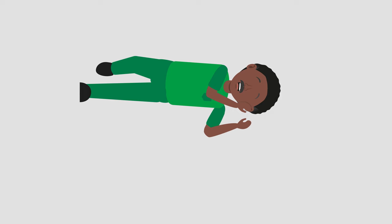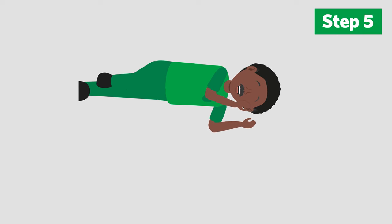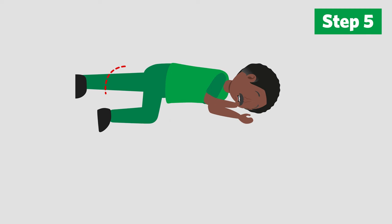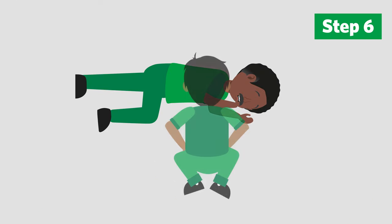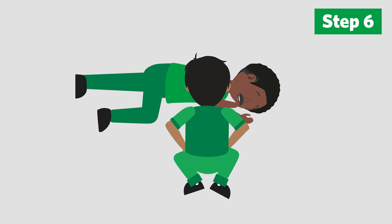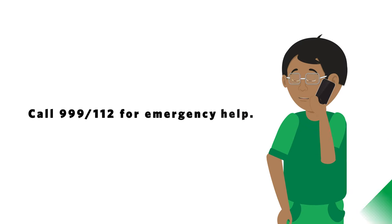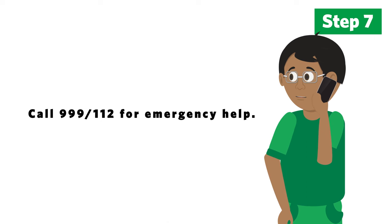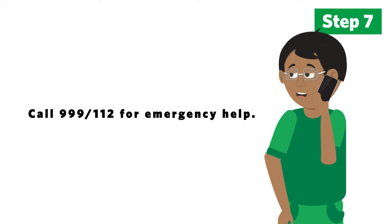With the other hand, bend their farthest knee up so that the foot is now flat on the floor. Now perform the knee pull — pull the knee to roll the casualty towards you onto their side. Adjust them as necessary. Ensure the airway is open and recheck the casualty's breathing. Remember, do not place your face near to the nose and mouth of the casualty. Call 999 or 112 for emergency help. Stay with the casualty until help arrives. Keep calm and offer your casualty reassurance.